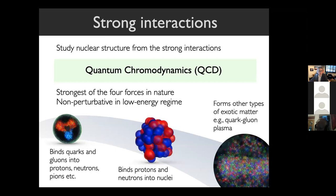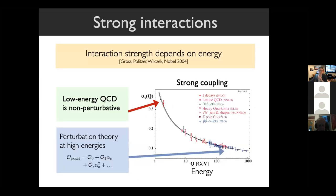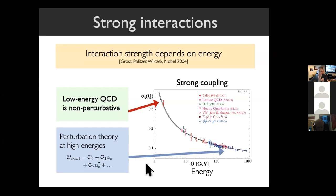To talk about first principles standard model calculations is to talk about the strong force, quantum chromodynamics, which is responsible for binding quarks and gluons into protons and neutrons and also for binding protons and neutrons into nuclei. The challenge with QCD is that it's non-perturbative — the interaction strength depends on energy. Here's a plot of the strong coupling constant: moving to small energy, the coupling becomes large. You can't do a perturbative expansion if you're studying QCD at low energy, which is relevant to the structure of a nucleus at rest in a detector. So you have to do something different, something that takes the non-perturbative physics into account.